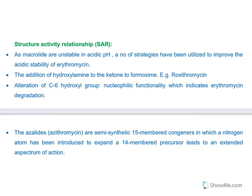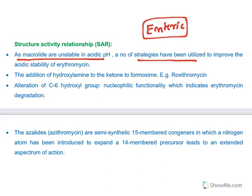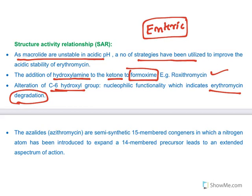Let us look at structure-activity relationship. Macrolides are unstable to acidic pH, so there are a lot of strategies used to improve that acid resistance. One of the major ones is enteric-coated tablets. When enteric-coated tablets are given, they are resistant to acidic pH and the erythromycin will get released only in intestine but not in stomach. The addition of hydroxylamine to the ketone group forms an oxime, which is roxithromycin. C6 hydroxy is the pathway of erythromycin degradation.